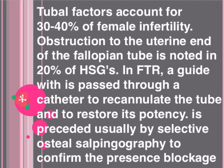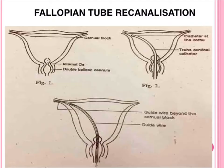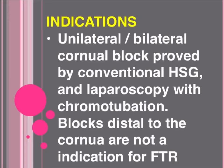Obstruction to the uterine end of the fallopian tube is noted in 20 percent of HSGs. In FTR, a guide wire is passed through a catheter to recanalize the tube and restore its patency. This is usually preceded by selective salpingography to confirm the presence of blockage.